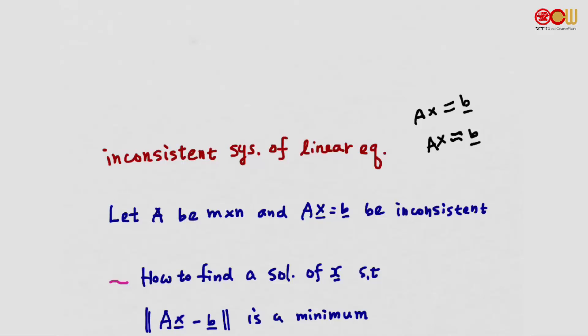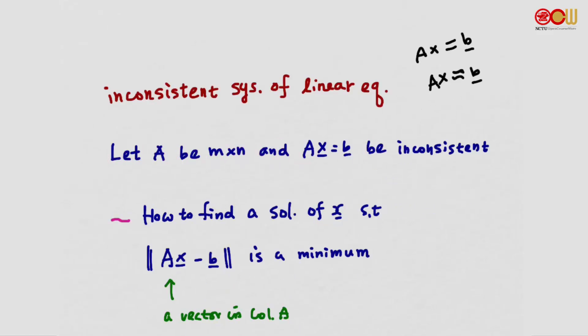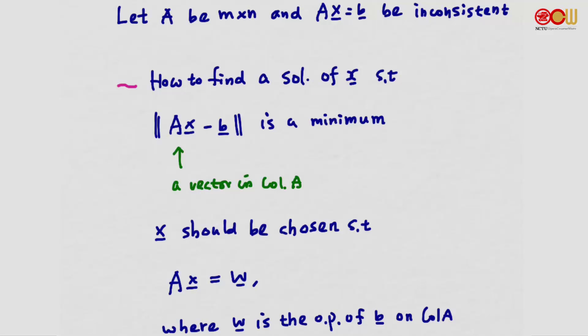We want to find an x that minimizes this quantity. Does this look similar to what we discussed in the first part of 6.4? Given a vector b, we would like to find x so that Ax minus b is a minimum — that means Ax is as close to b as possible. This is a vector in the column space of A, so the problem is finding the vector in the column space of A that is as close to b as possible. This is orthogonal projection again.